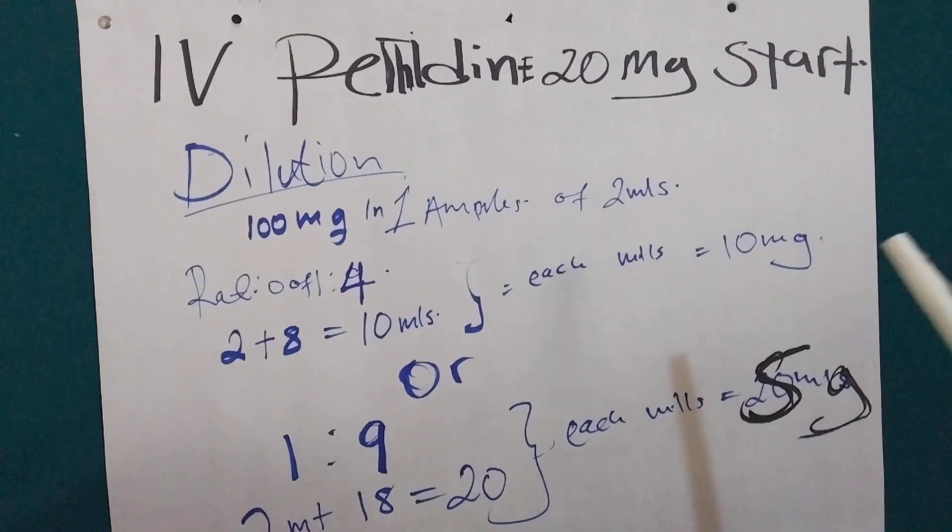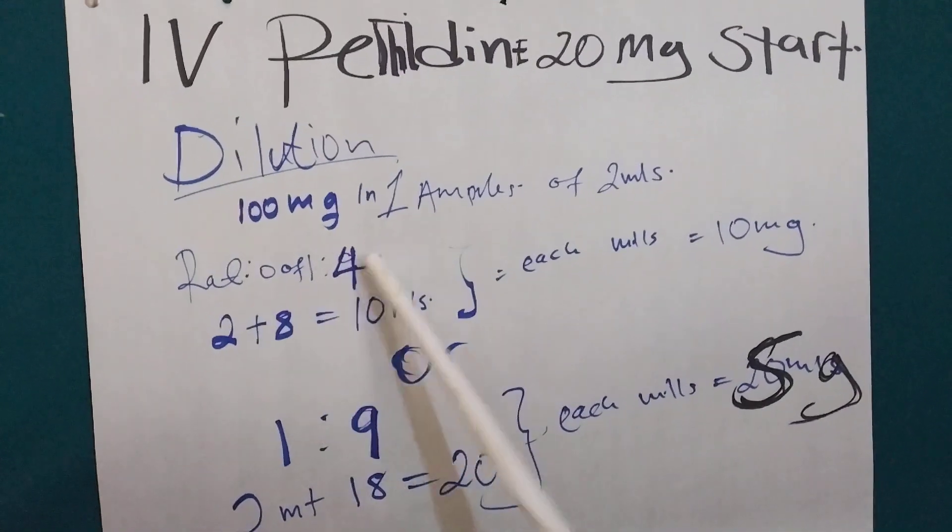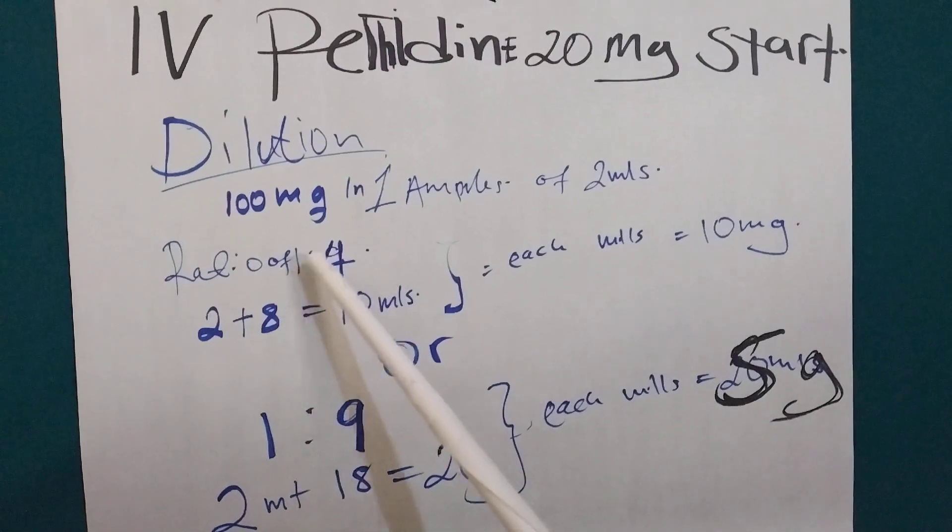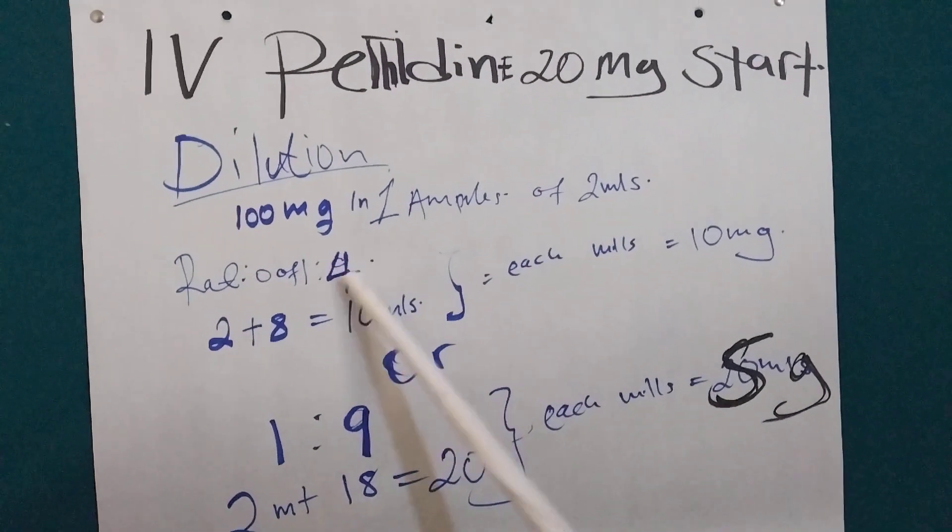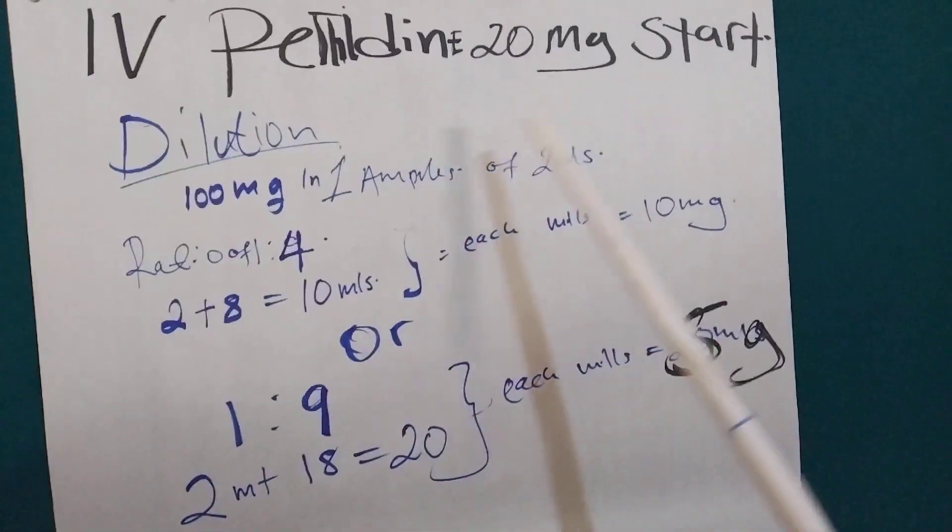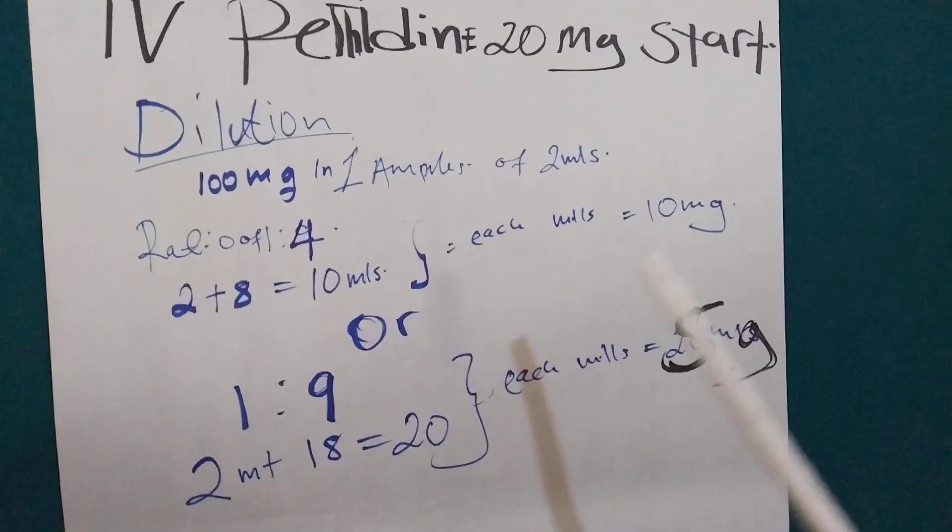And then we are going to use the dilution ratio of 1:4, which means 1 mL of IV Pethidine and then we add 4 mL of water for injection or normal saline.